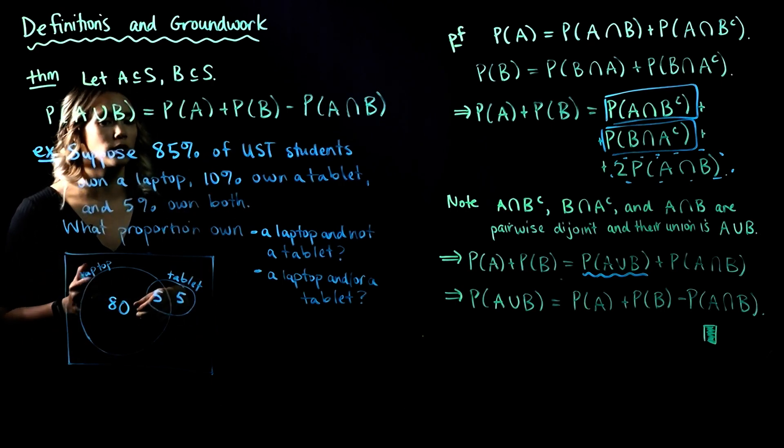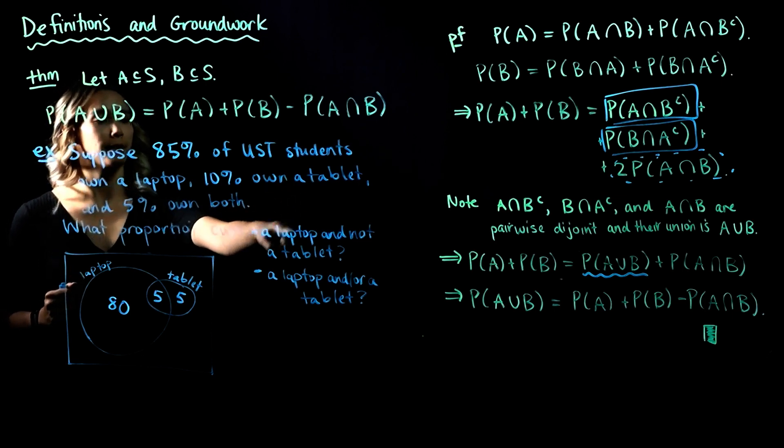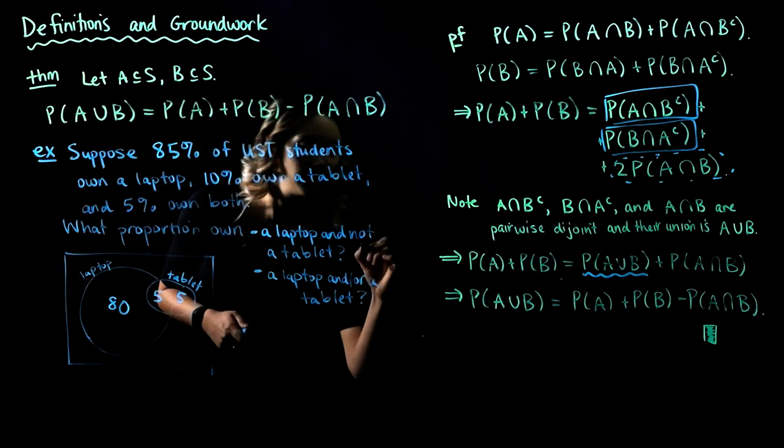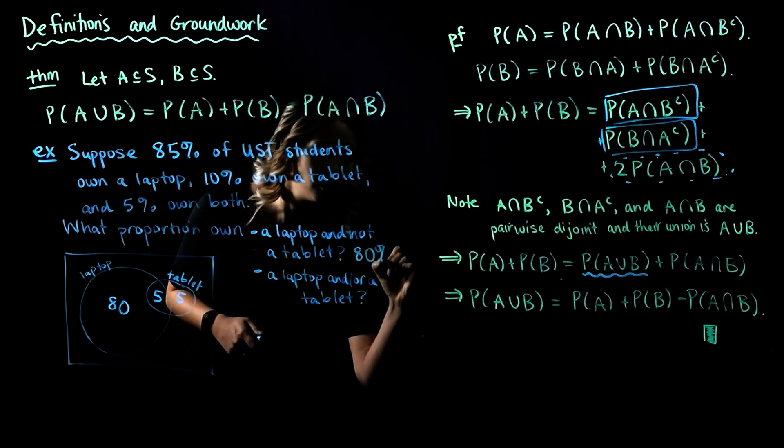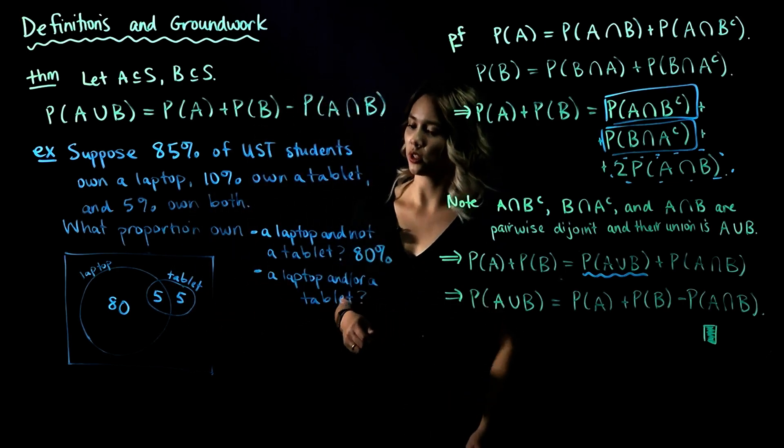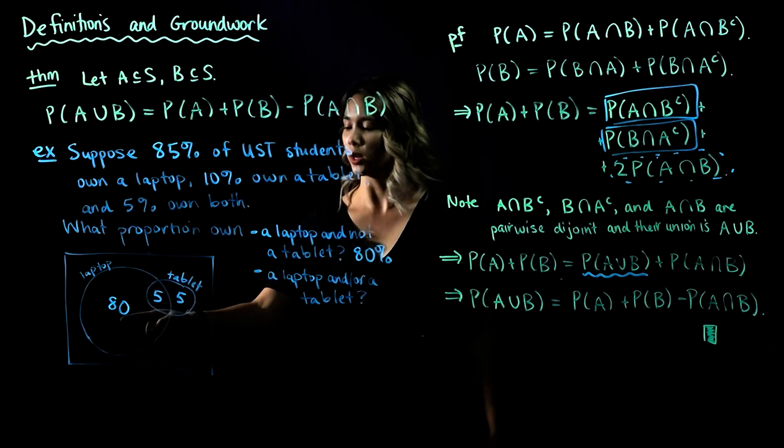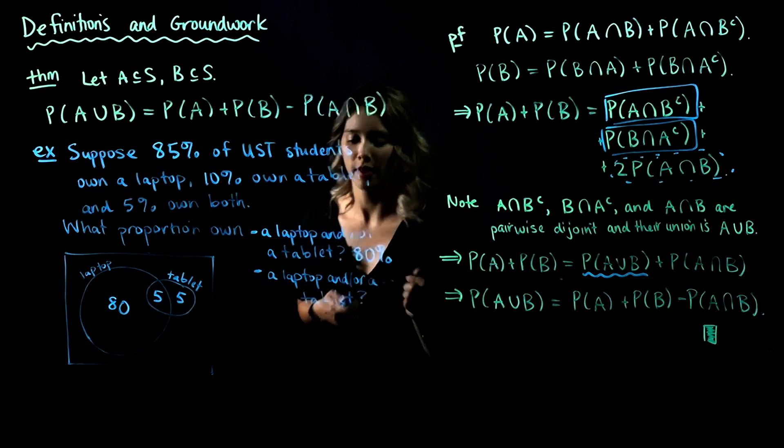Now we can go ahead and answer our questions. What proportion own a laptop and not a tablet? That's 80%. What percent of students own a laptop and or a tablet? We're just going to add these three numbers together. So 80 plus 5 plus 5, that's 90%.